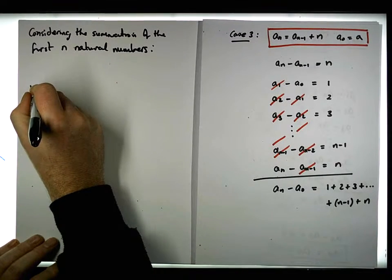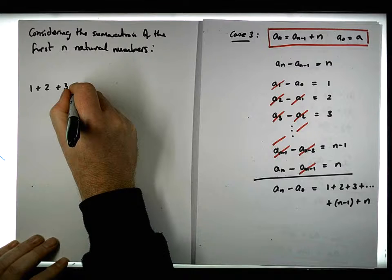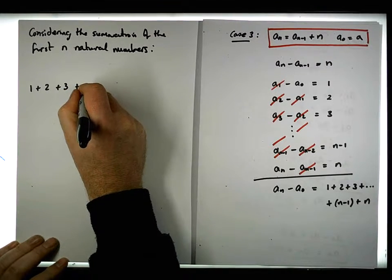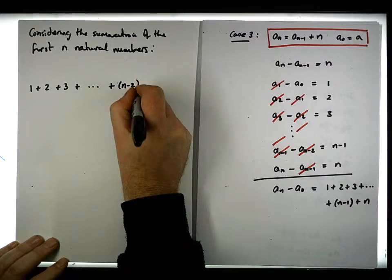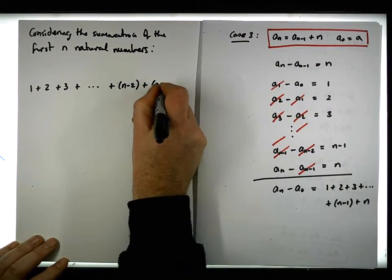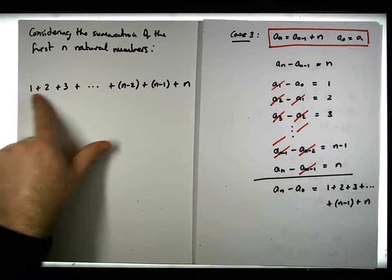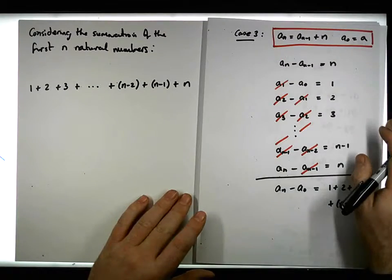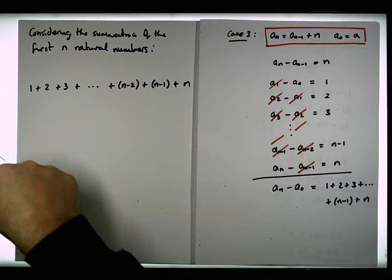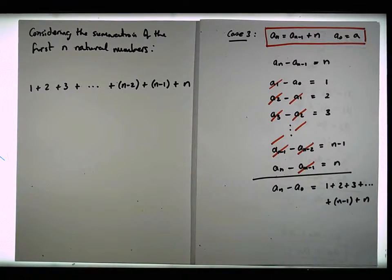So let's say we have 1 plus 2 plus 3, let's say plus all the way through, let's say plus n minus 2 plus n minus 1 plus n. So here's the summation of the first n natural numbers. And this actual closed form, this closed form summation that we're going to end up with is attributed to Gauss.